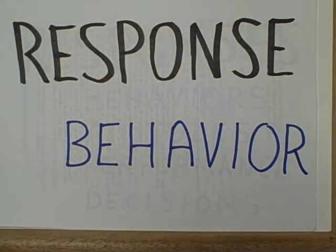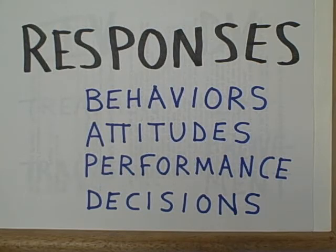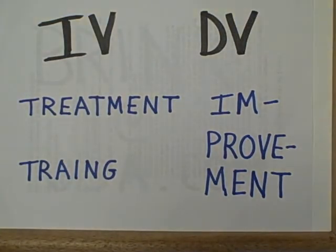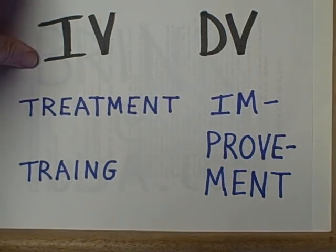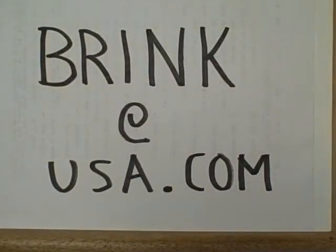Then we come to the dependent variable — the response, the behavior that that organism is going to engage in. The kinds of behaviors we could look at as dependent variables in psychology would be attitudes expressed on a questionnaire, measures of performance in industrial psychology, the kind of decisions that a consumer makes in marketing research. In clinical psychology or industrial psychology, we would view the treatment or training that is prescribed as a kind of independent variable, and the person's response to that training — in other words, the improvement — as a kind of dependent variable.